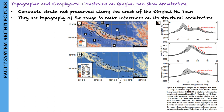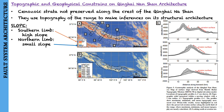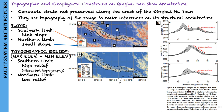Although Cenozoic strata are not preserved along the crest of the Qinghai-Nanshan, the topography of the range may contain information about its structural architecture. The southern limb has steeply dipping strata, whereas the northern limb has a small slope. Comparing topographic relief (maximum minus minimum elevation within a 1 km radius circular window), the southern limb has highly dissected topography with local relief exceeding 1000 m, while the northern limb has relief less than 100 m.